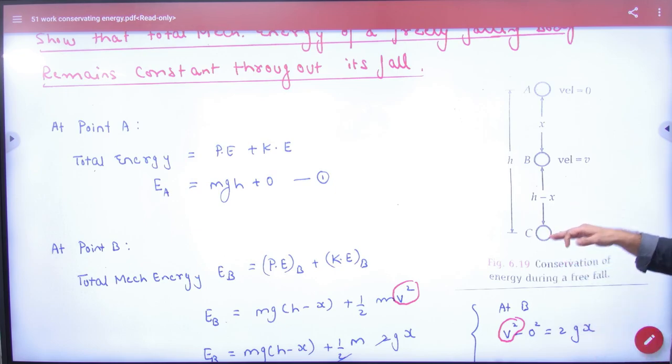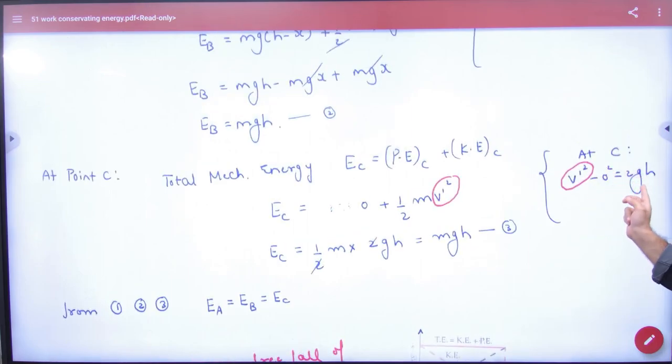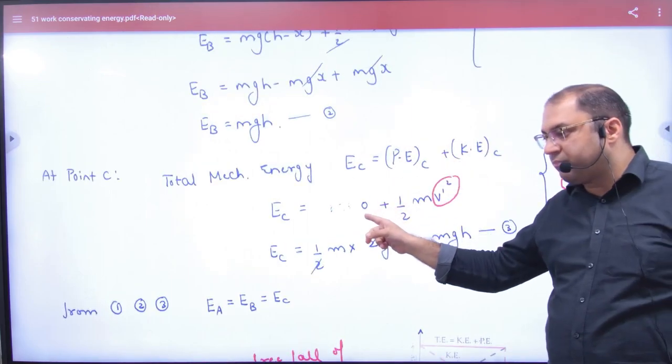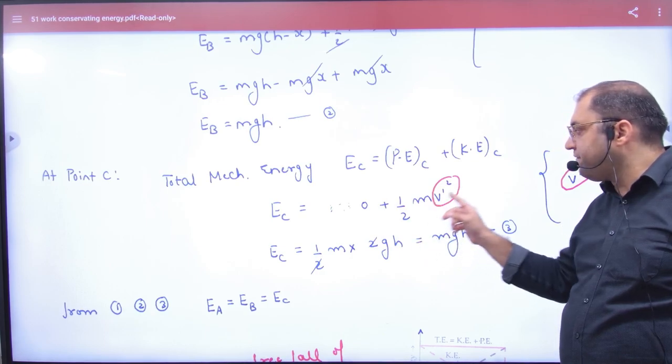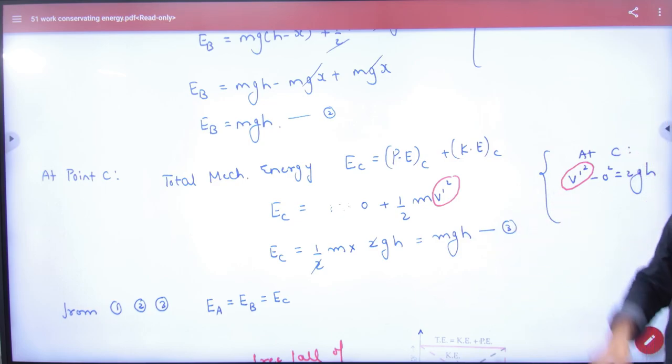So if I remove the value, so here and here, v squared minus 0 squared is 2gh. So this is v squared, 2gh. Potential bottom is zero. And kinetic, half m into v squared. And v squared is 2gh. 2 cancel. Answer: mgh.